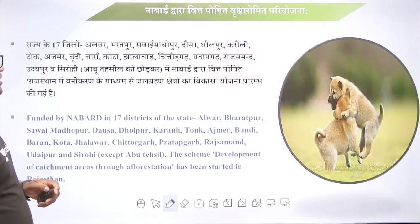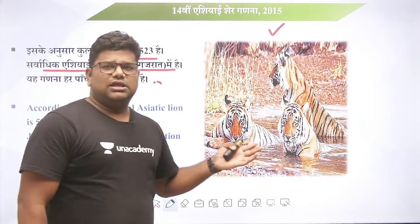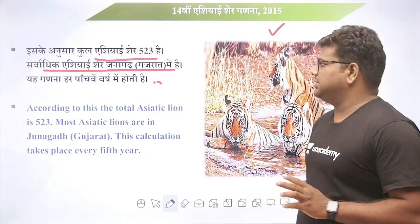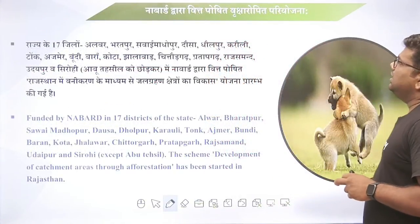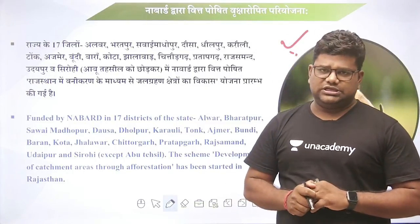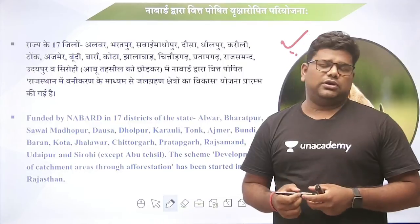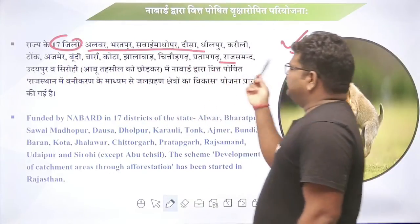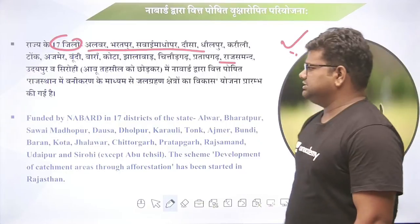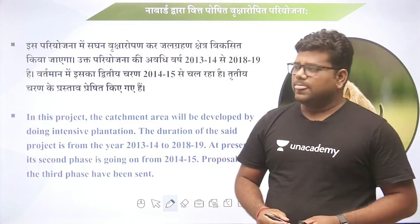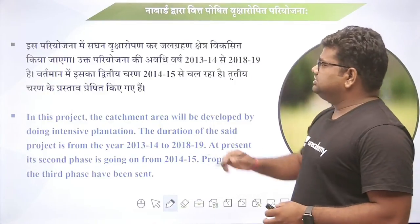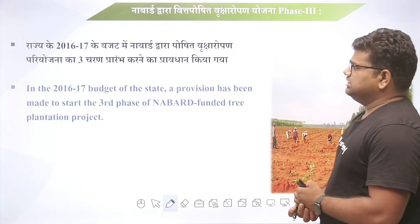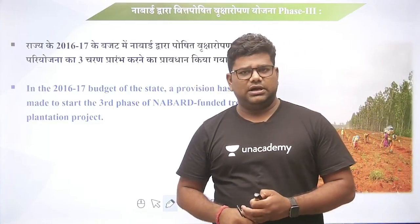राजस्थान में Project Tiger मुख्यतः तीन जगह चल रहा है - रणथंभोर, सरिस्का और मुकुंद्रा हिल्स। NABARD ने सात जिलों में वृक्षारोपण के लिए कार्य किए। राजस्थान में वनीकरण को बढ़ावा दिया जा रहा है। वृक्षारोपण से जल ग्रहण क्षेत्र का भी विकास होगा और भविष्य में कृषि को फायदा होगा। यह कार्य तीन चरणों में राजस्थान में NABARD ने किया है।